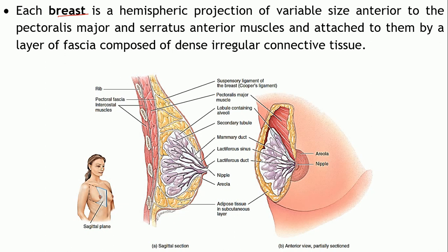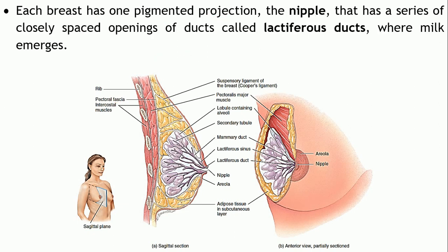Each breast is a hemispherical projection which may be variable in size, and it is located anterior to the pectoralis major and serratus anterior muscles, attached to them by a layer of fascia. This fascia is a layer of dense irregular connective tissue which supports each breast.